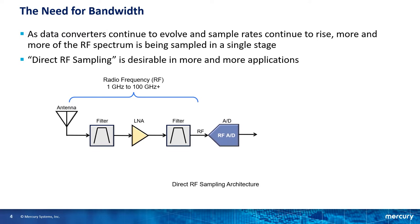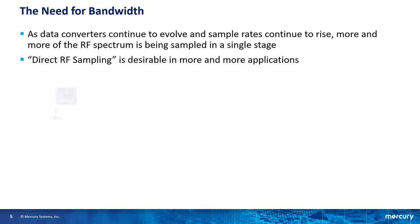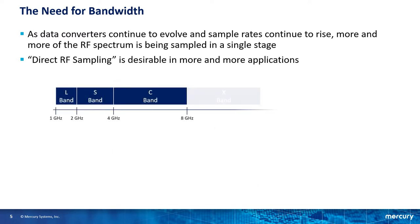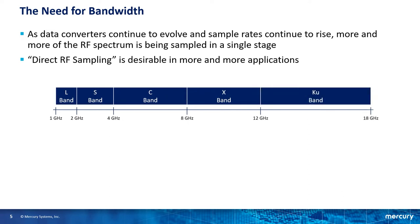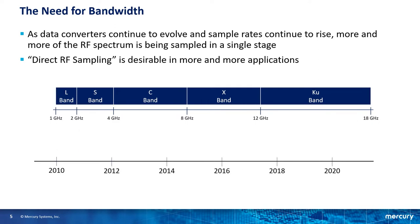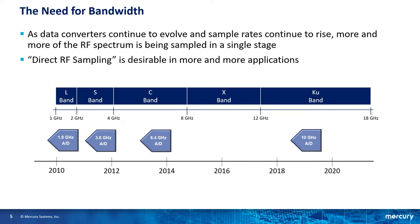So can we sample from 1 GHz to 300 GHz? Well, technology hasn't gotten us there yet, but let's take a look at how much of the spectrum we can sample. If I map what is referred to as the satellite frequency bands, we go from L band up to KU band at 18 GHz. There's actually a K band and a KA band above that which brings us to 40 GHz. If we look at the RF A to Ds available over the past 10 years, we went from 1.8 GHz per second to 3.6 to 6.4, and now we're at 10 GHz per second or a little higher. I'm limiting A to Ds to a resolution of 12 bits or greater, because this is a pretty common requirement for radar and communications applications.